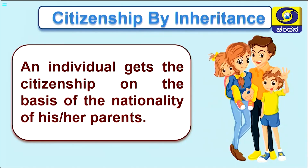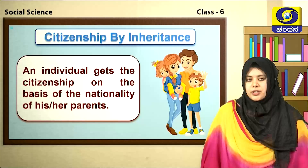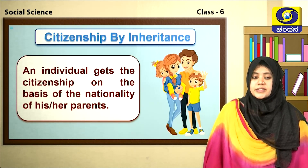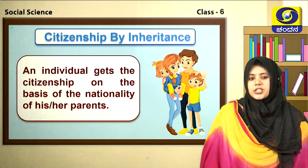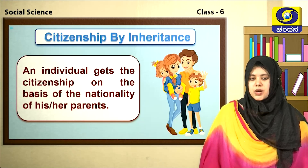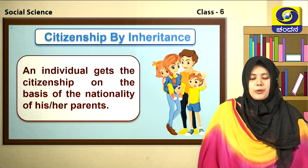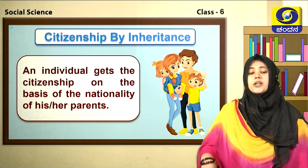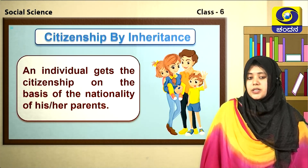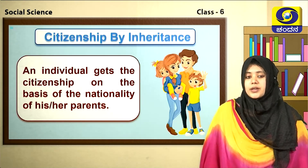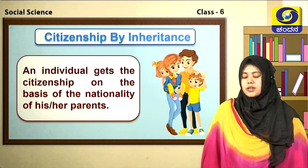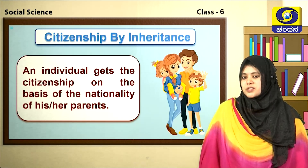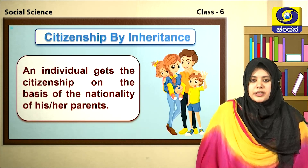Now let us move to the next method — citizenship by inheritance. In this method, an individual gets citizenship on the basis of the nationality of his or her parents. If a person is born outside our country, but either his mother or his father belongs to India, that particular person can get the nationality of India. Citizenship obtained on the basis of the nationality of one's parents is called citizenship by inheritance.